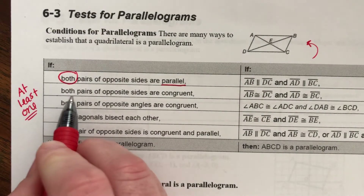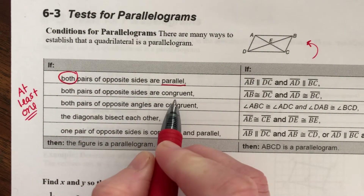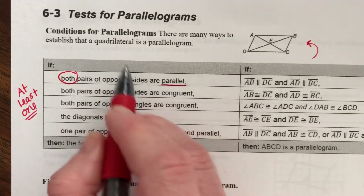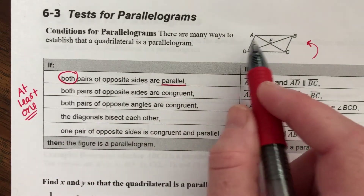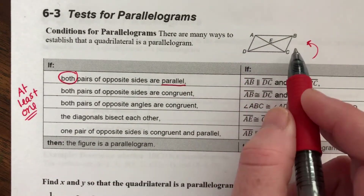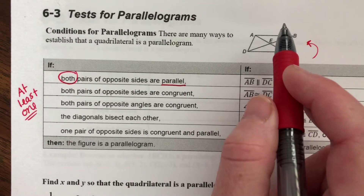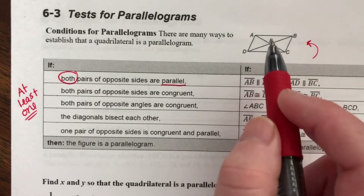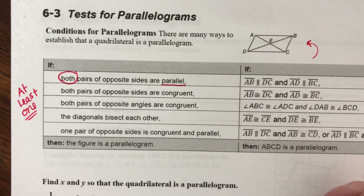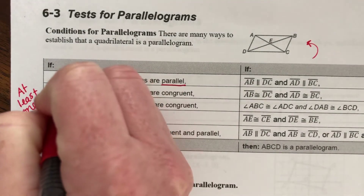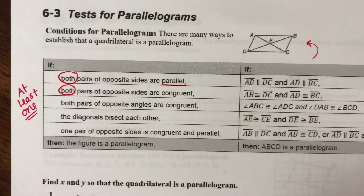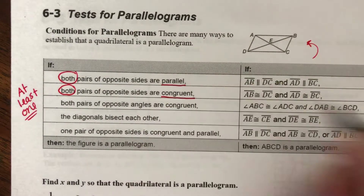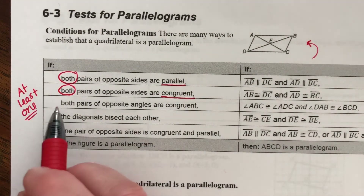Second: both pairs of opposite sides are congruent. We don't have to know they're parallel — it's enough to just know that they're congruent. So if these opposite sides are the same size and these opposite sides are the same size, then we know this is a parallelogram. Both pairs have to be parallel or both pairs have to be congruent for us to know a four-sided shape is a parallelogram.